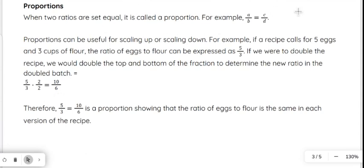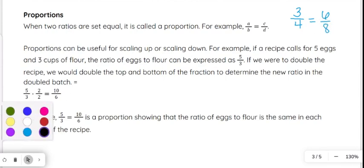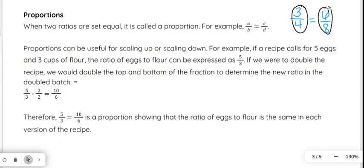Now, when we have two ratios set equal to each other, it's called a proportion. So for example, a over b equals c over d. So maybe going back to the 3 fourths that we just used, if I had 3 fourths equal to 6 eighths, that would be a proportion that's setting equal to ratios. 3 over 4 is one ratio and 6 over 8 as another ratio.